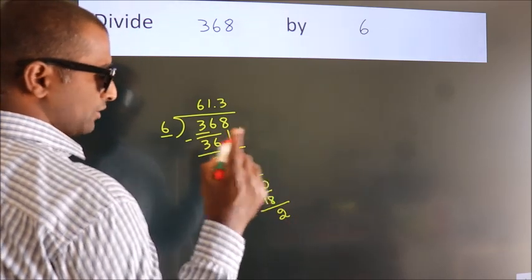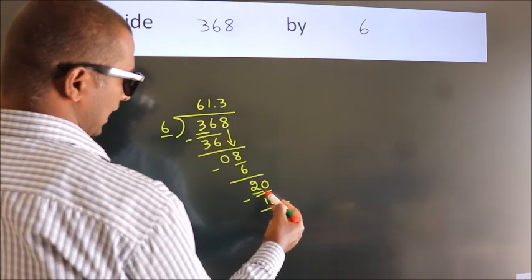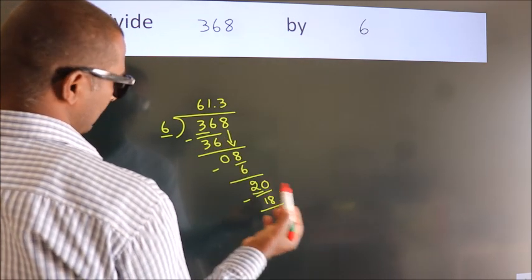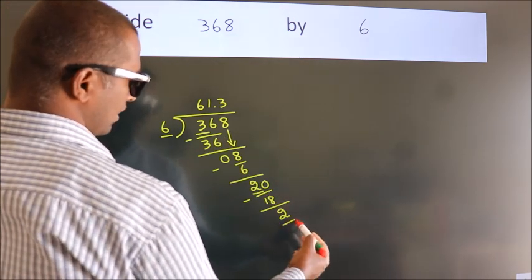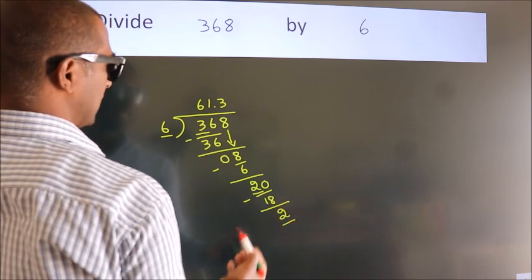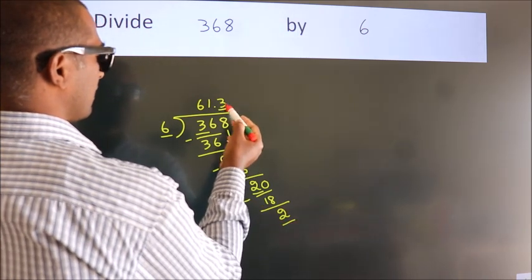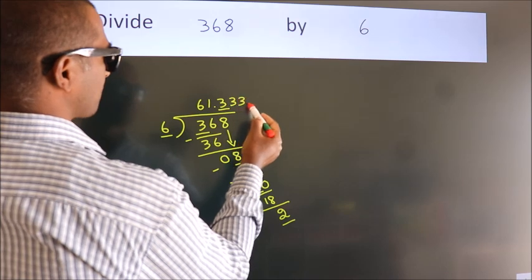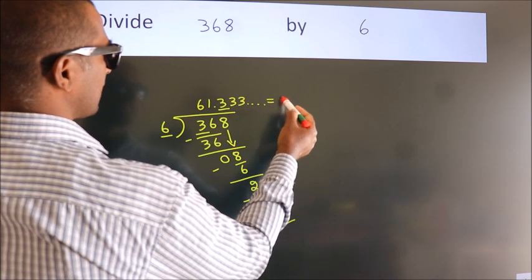Now you observe, we had 2 here and we got 2 again. That means this number keeps on repeating. So this is our quotient.